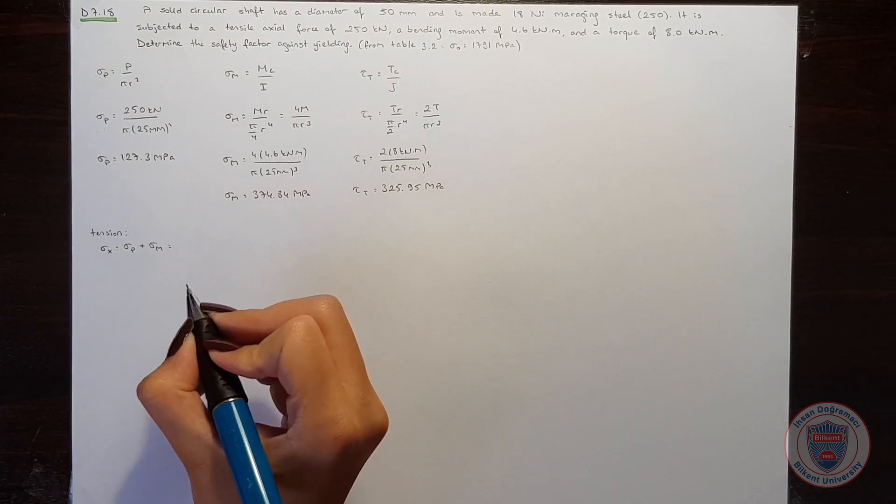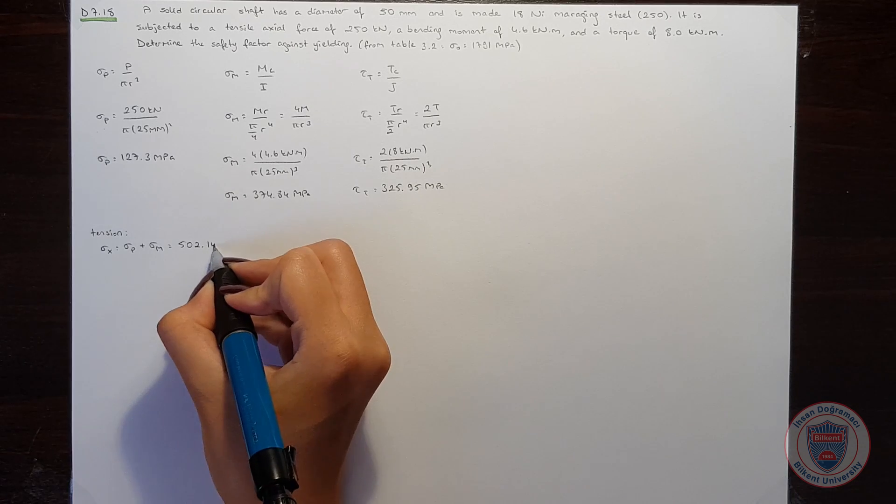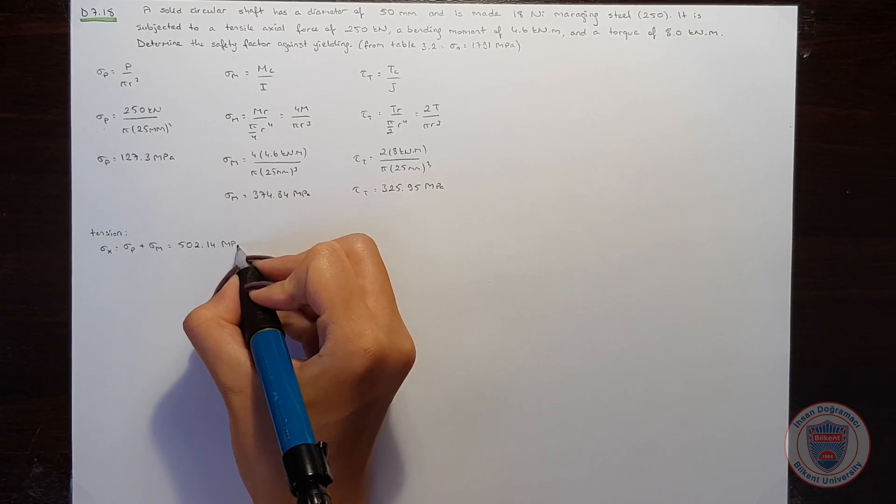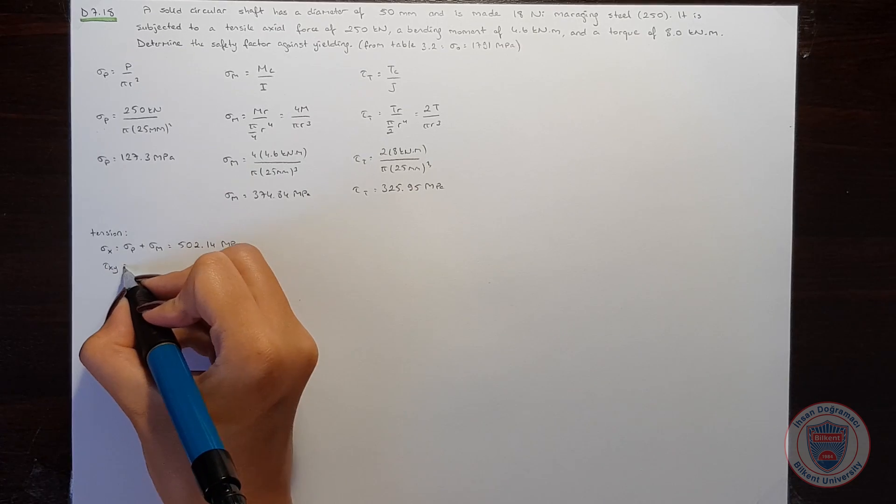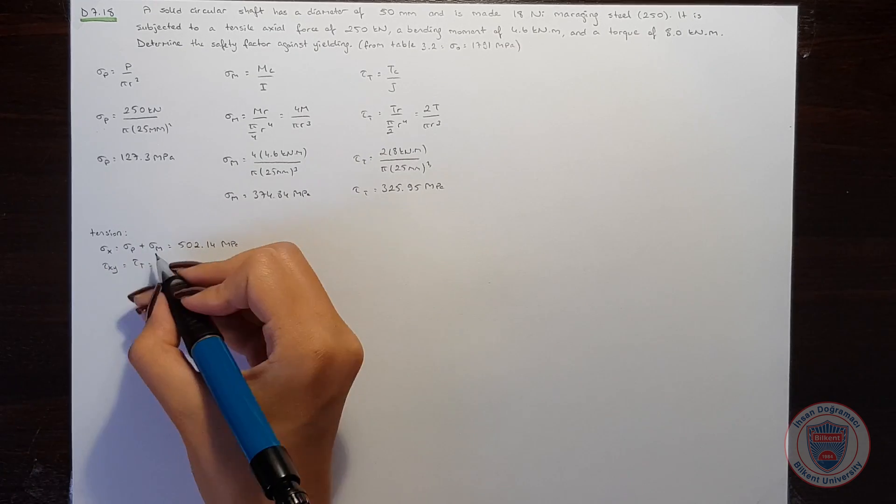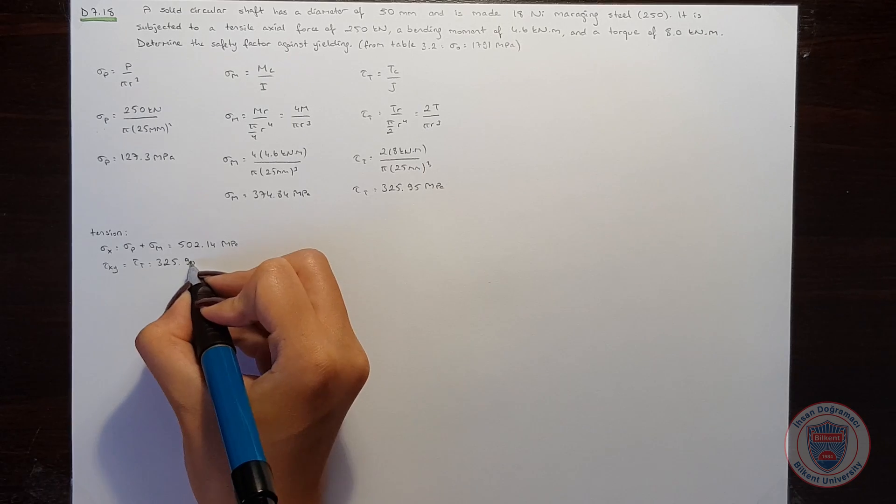So it will be equal to 502.14 MPa. And tau xy will be equal to tau t, which is 325.95 MPa.